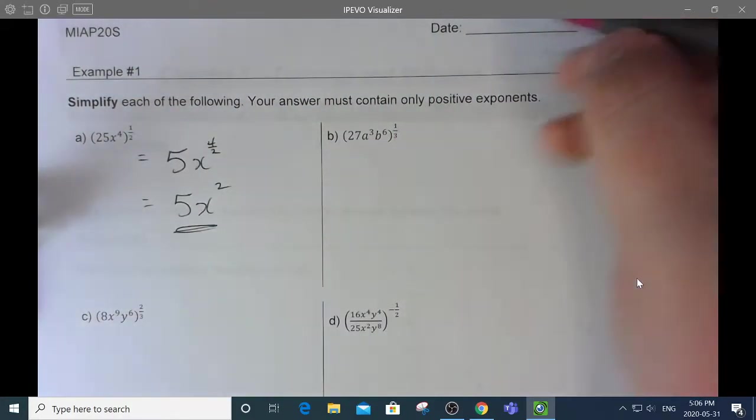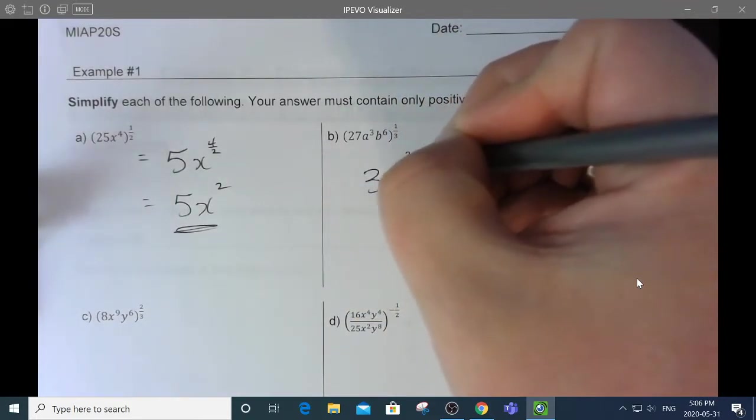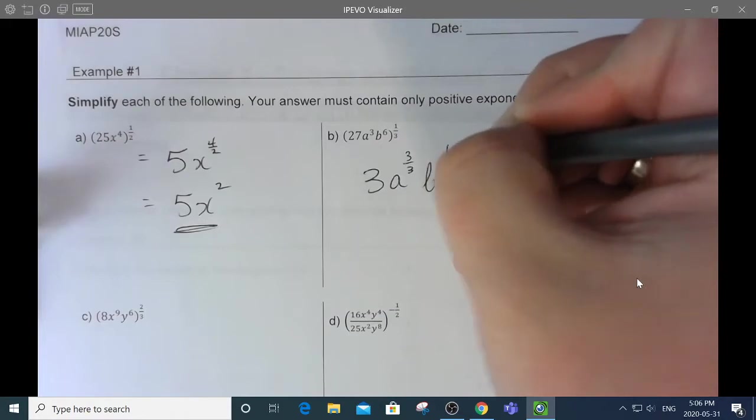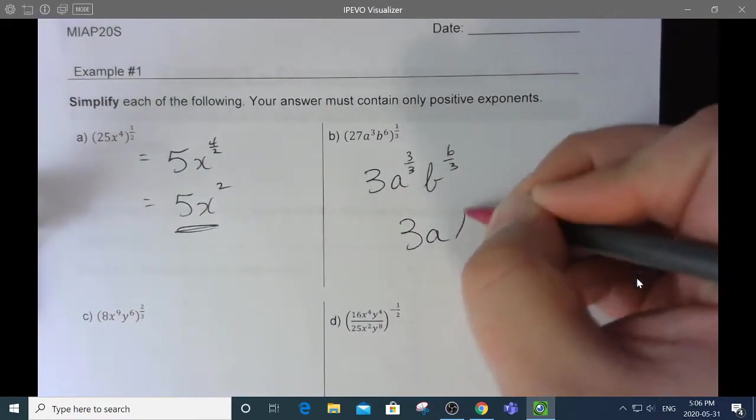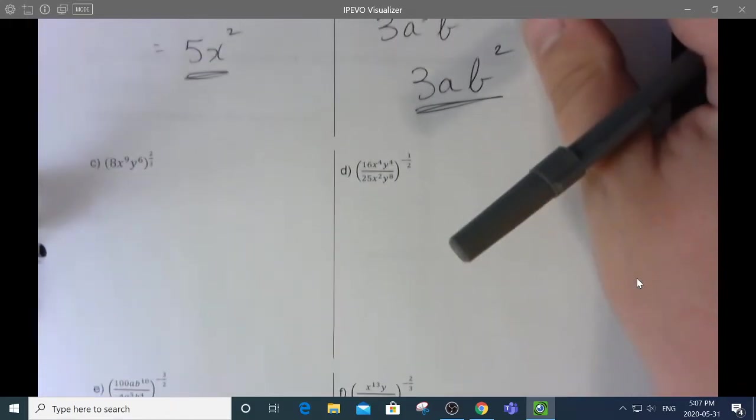Now, this is like the cube root of 27. And then that's like saying a to the 3 over 3, b to the 6 over 3, which is like saying 3ab squared.